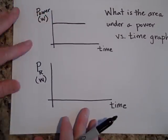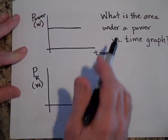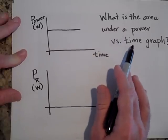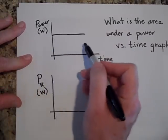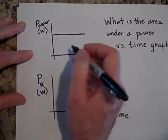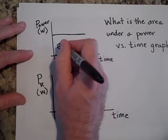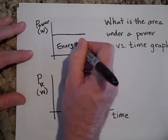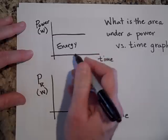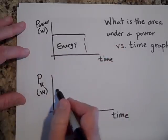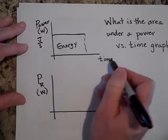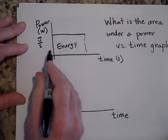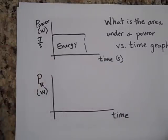What is the area underneath the power versus time graph? The area gives you energy, or work done. That's because power is joules per second, and multiplying by seconds gives you joules — so the area under the power-time graph is energy in joules.